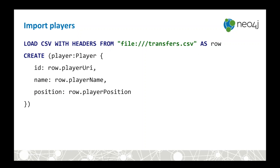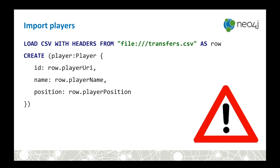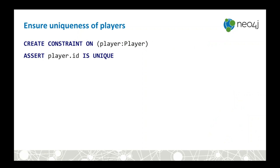Now we're ready to import. Starting with players: LOAD CSV, CREATE a node with the label 'player' and properties — id from player_uri, name from player_name, position from player_position. One thing that catches people out is that by default there are no constraints or schema in Neo4j, so if you run the CREATE query again you'll get all the players twice. To avoid that, you need to define a constraint. Neo4j is a schema-optional database — you can run without schema, which is nice when starting out, but once your model is taking shape you'll want to constrain things.